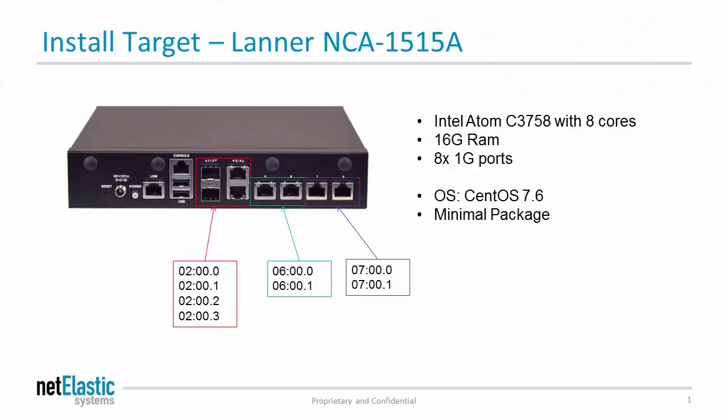In today's demo I'm going to install our vBNG router on this Lanner NCA-1515A tabletop network appliance box. It has an Intel Atom processor with eight cores, 16 gigabytes of RAM, and eight one-gigabit ports. I already have CentOS 7.6 installed with the minimal software package. The box has eight one-gig ports: four of them on PCI bus 02, two on bus 06, and two on bus 07.